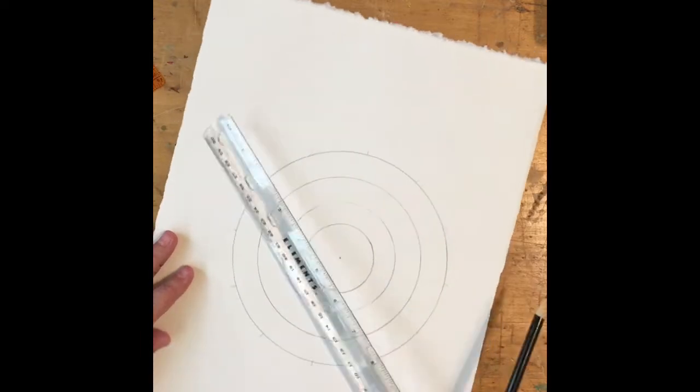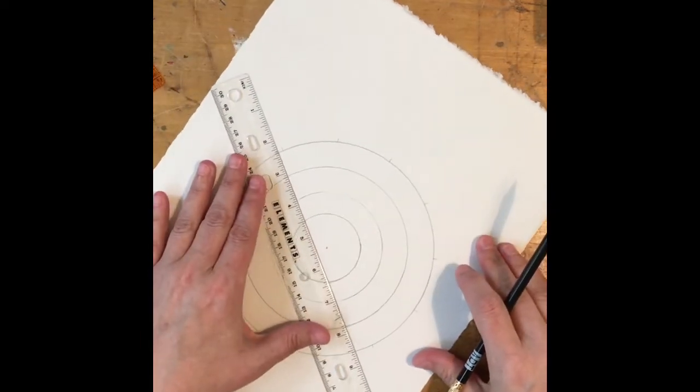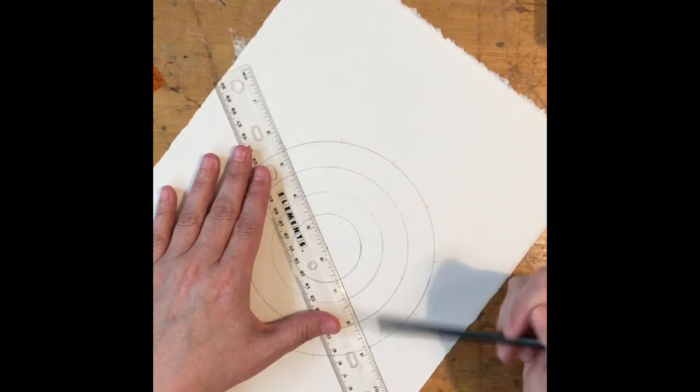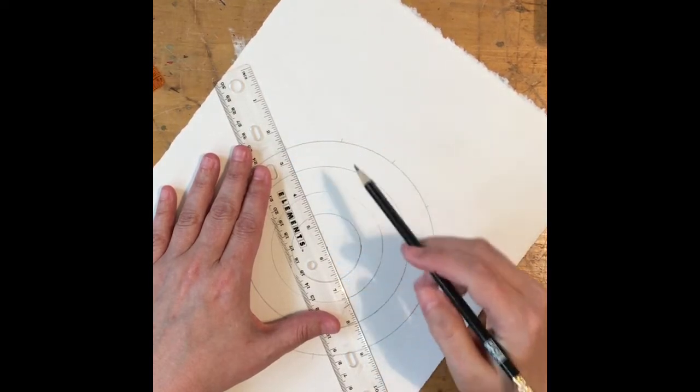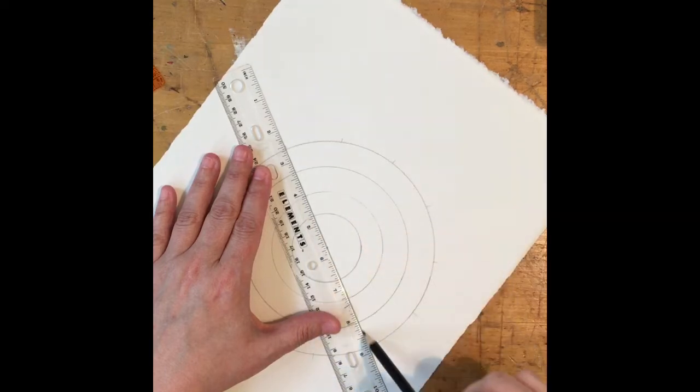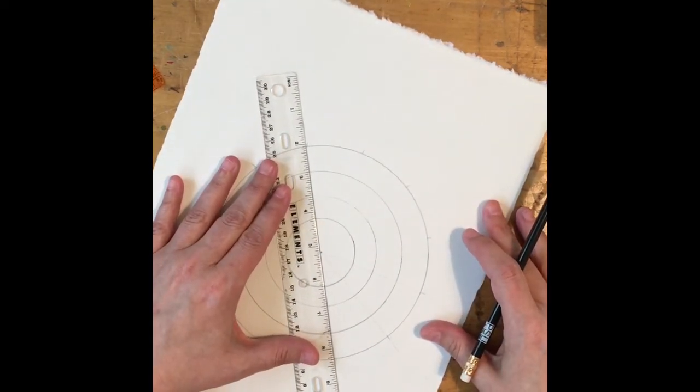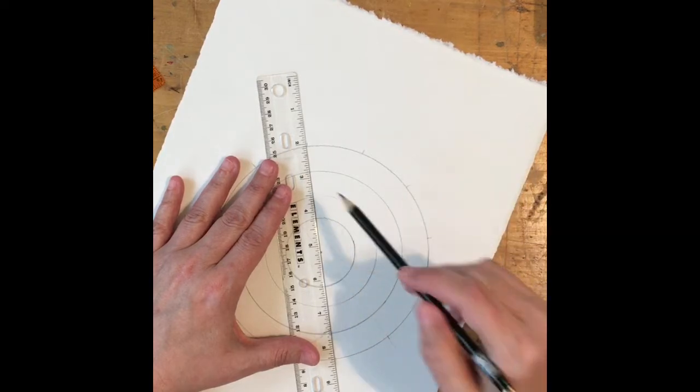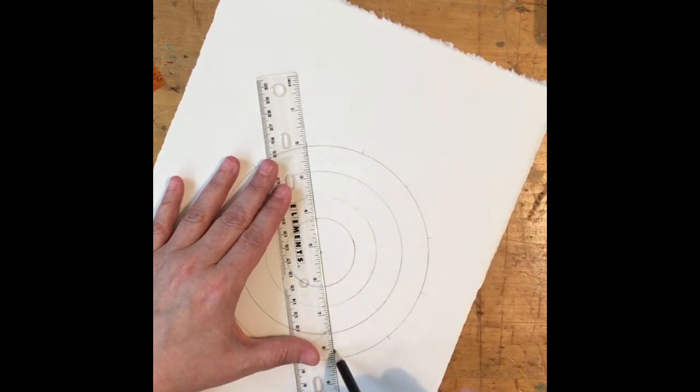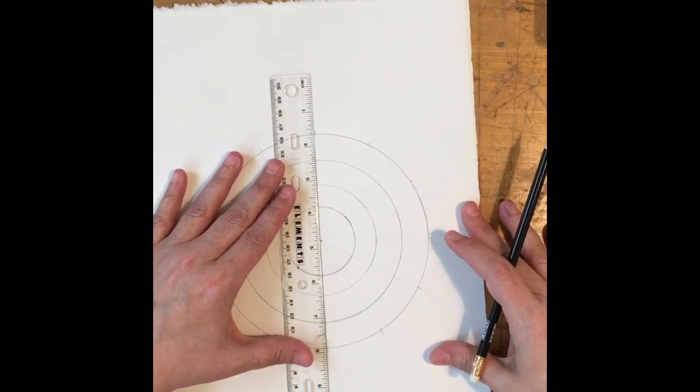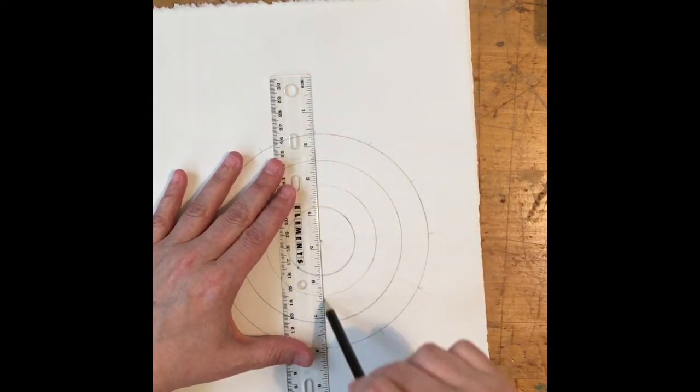And now I'm going to use my ruler and I'm going to line up both of my 30s. So here was my 30 and there was my 30 and I want to make sure that it's going right across my center line. Then I'm going to do my 60s. And as I'm doing this I'm actually cutting my circle into pie shapes. I'm going to come up with 12 pie shapes.